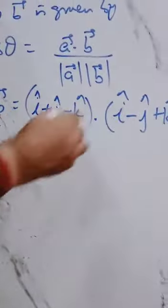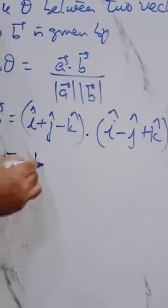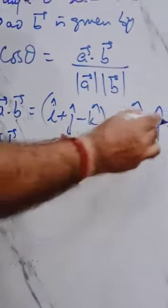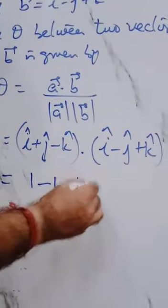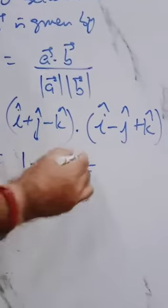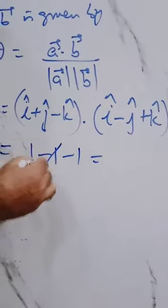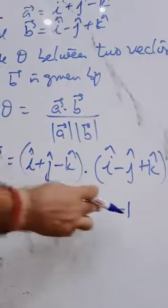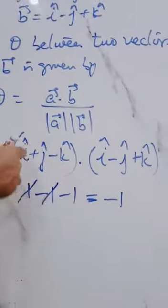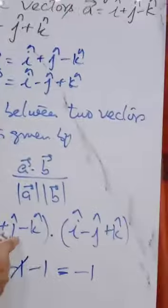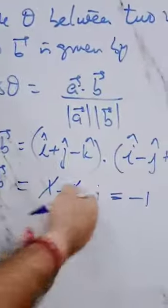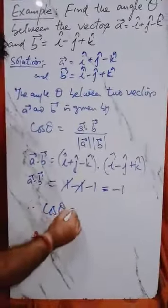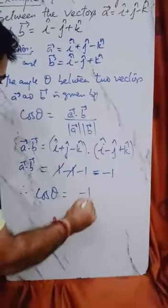Then j dot j, but this is minus, so this will be equal to minus one. Then again we have minus one. So the value of a dot b is minus one, because i dot i is one, j dot minus j is minus one, and minus k dot k is minus one. Therefore a dot b equals minus one.